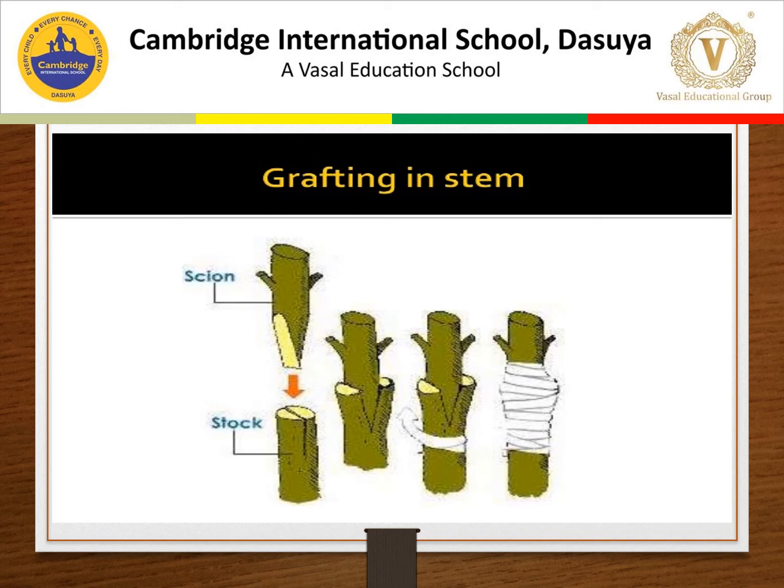In grafting, stock and scion are placed together such that the cambium of the two is in intimate contact. The advantages of grafting include improving varieties and fruit production in mango, apple, pear, and guava. The scion may flower sooner when grafted into a mature tree. On the same stock, different varieties can be grafted.